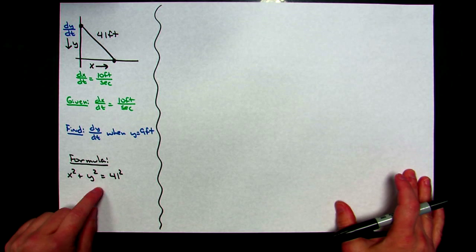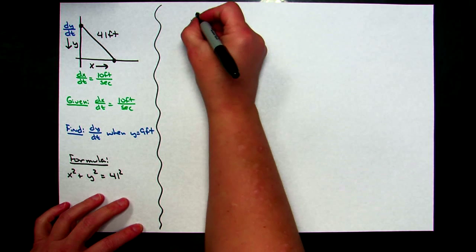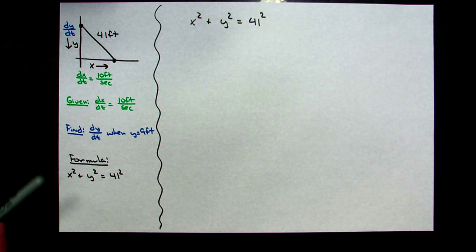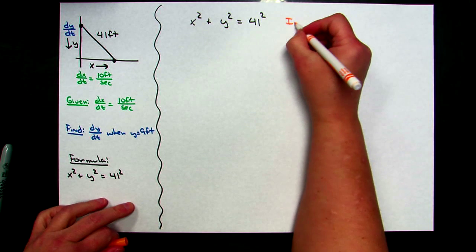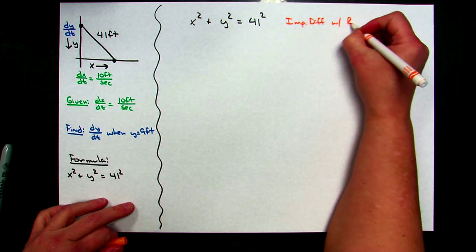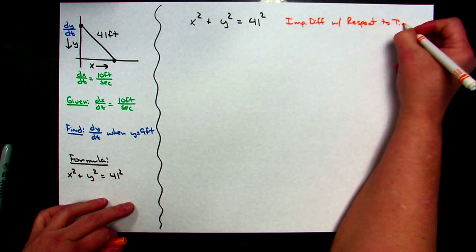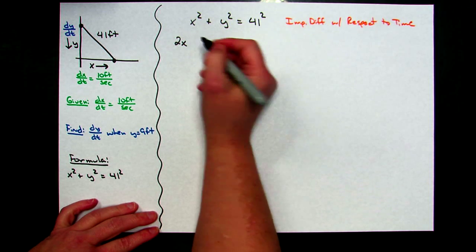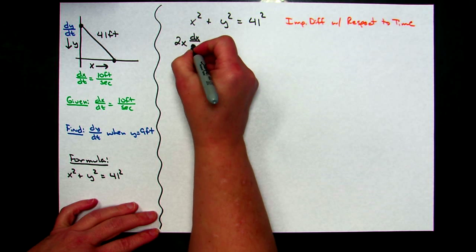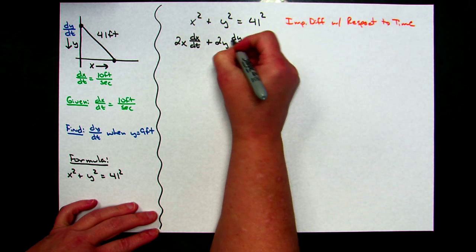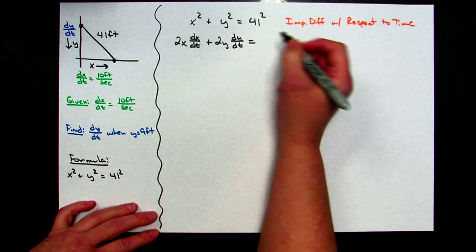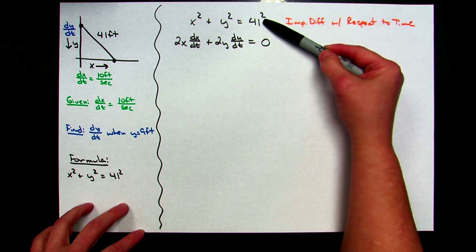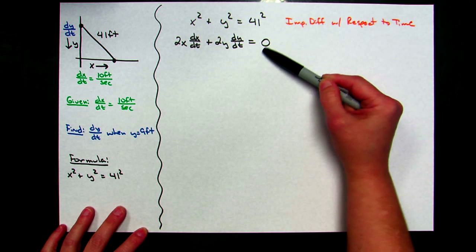Working out the related rates problem, I start with the formula x² + y² = 41². The first thing you need to do is implicitly differentiate your equation with respect to time. Doing that, I get 2x(dx/dt) + 2y(dy/dt) = 0, since the derivative of a constant is zero. And really, that implicit differentiation is about the only calculus in the entire problem. From here to the end, it is all just arithmetic.